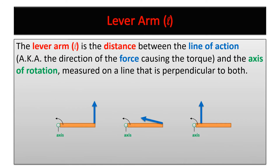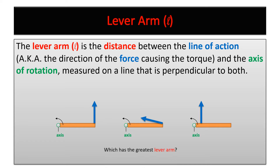The lever arm is the L in the formula tau equals force times L. The lever arm is the distance between the line of action — also known as the direction of the force causing the torque — and the axis of rotation, measured on a line that is perpendicular to both. The line of action is not the lever arm; it's the line that acts along the force. You can draw a long line in the direction of the force to make it easier to see the lever arm.